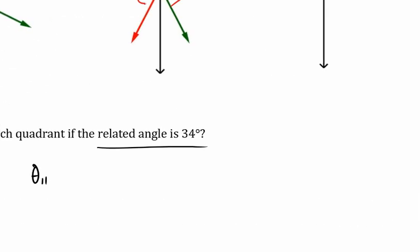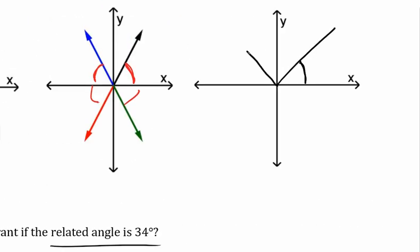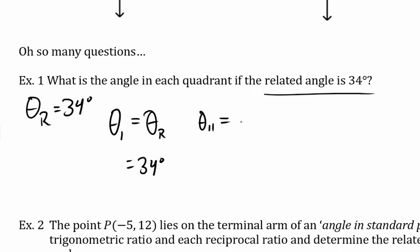Theta in quadrant two is more interesting. The formula is 180 minus theta-related, because you go all the way around and then back. So theta two equals 180° minus theta-related, which is 180 minus 34, which equals 146°.